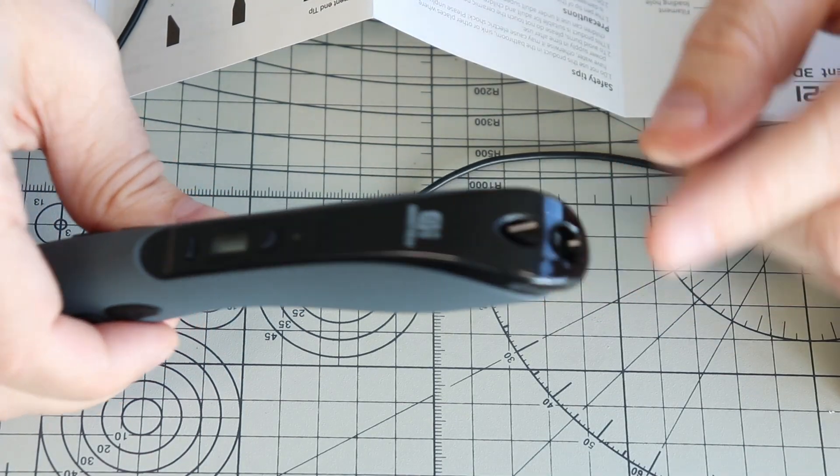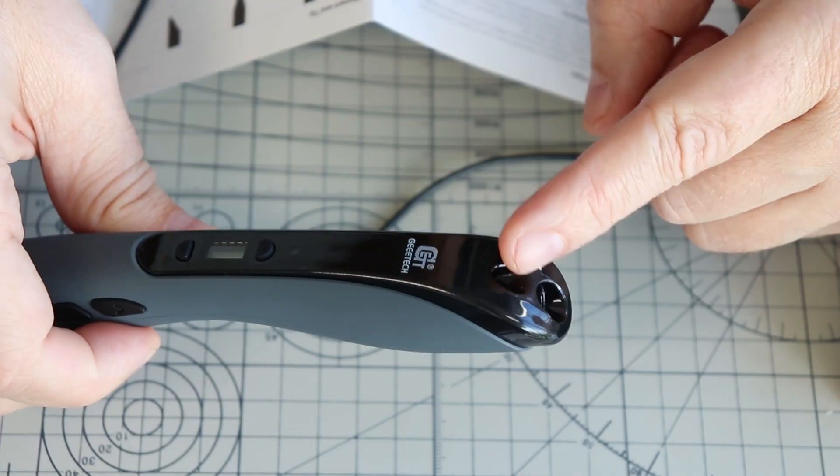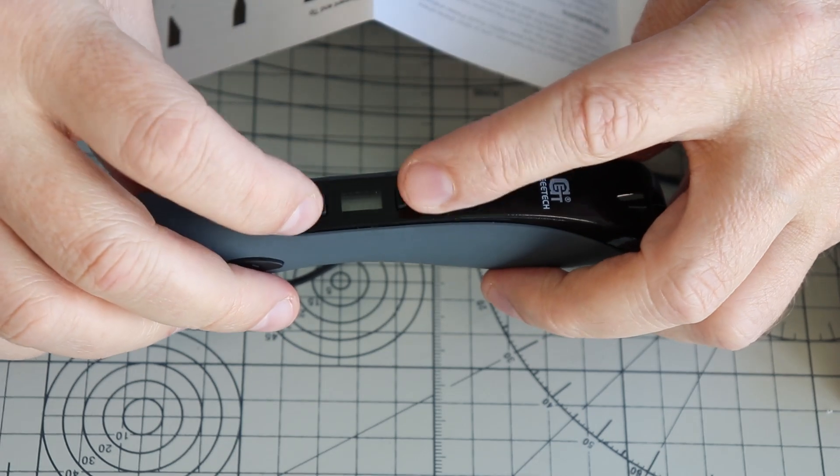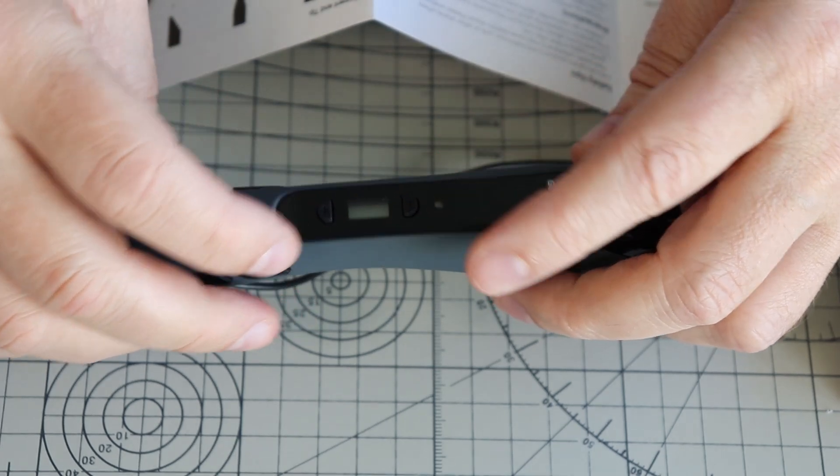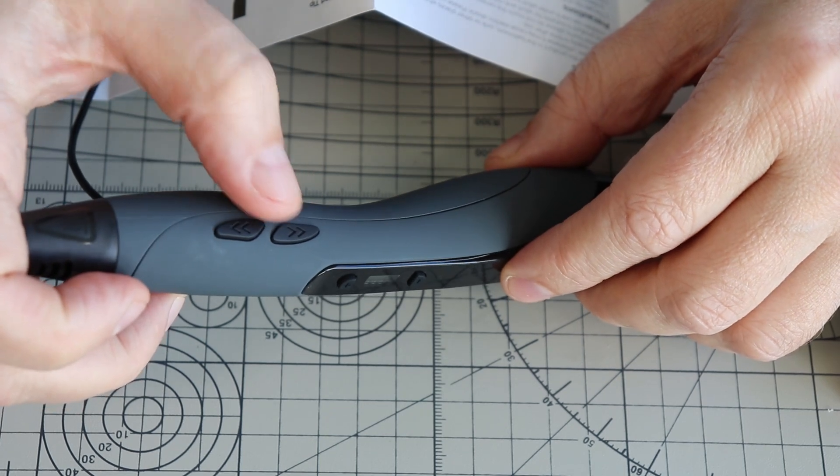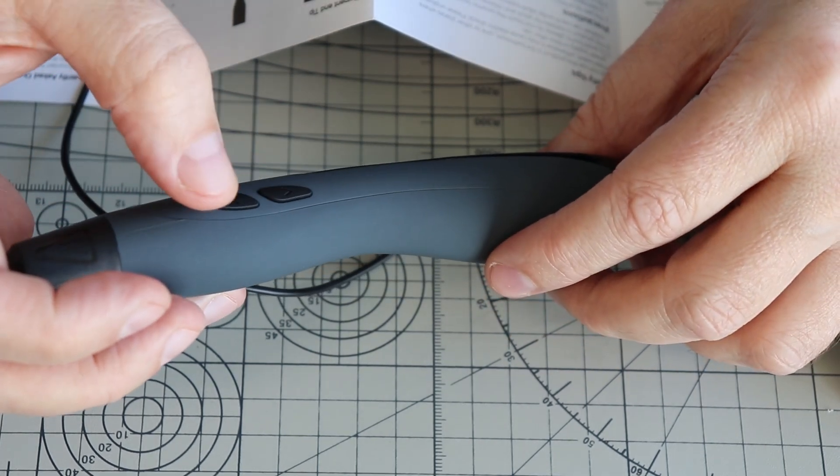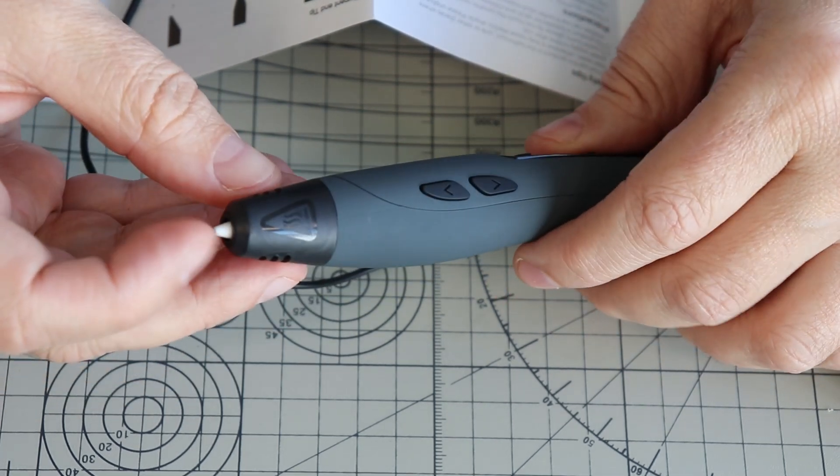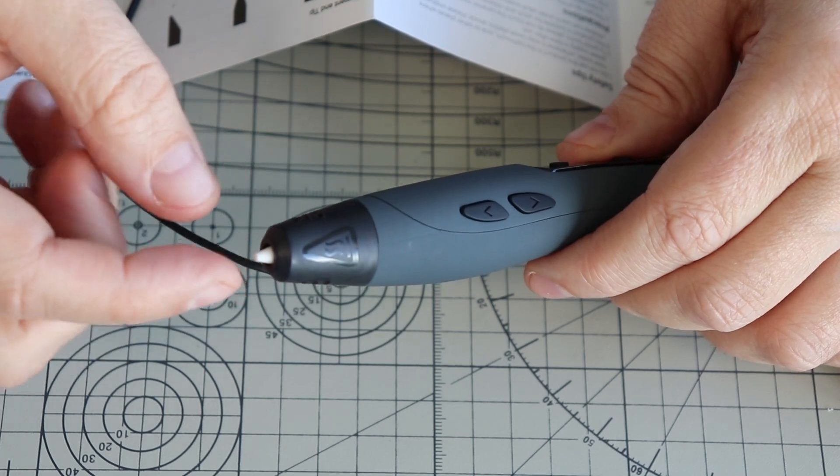Let's take a closer look of the pen, so here goes the power and the filament input. There is a LCD screen and buttons to select the temperature of the filament type. Here we have buttons to change the speed, increase and decrease. On the other side we have the buttons to load or unload filaments. And at the end we have the ceramic tip, here goes the extruded filament.